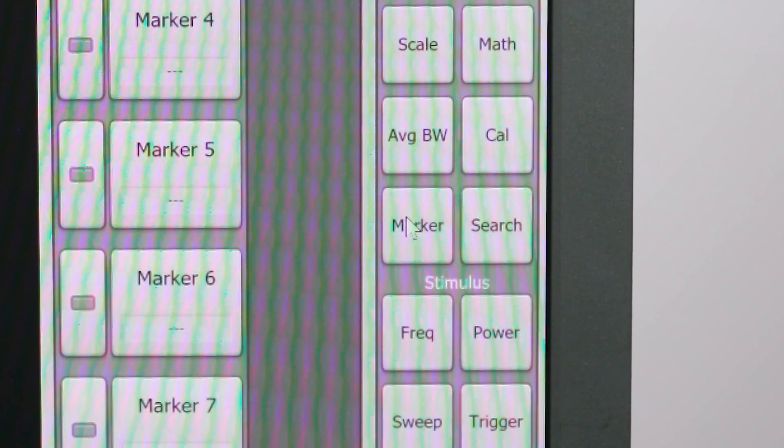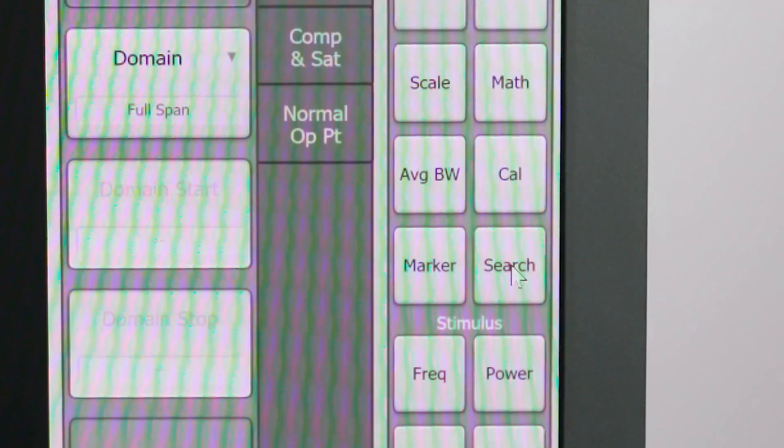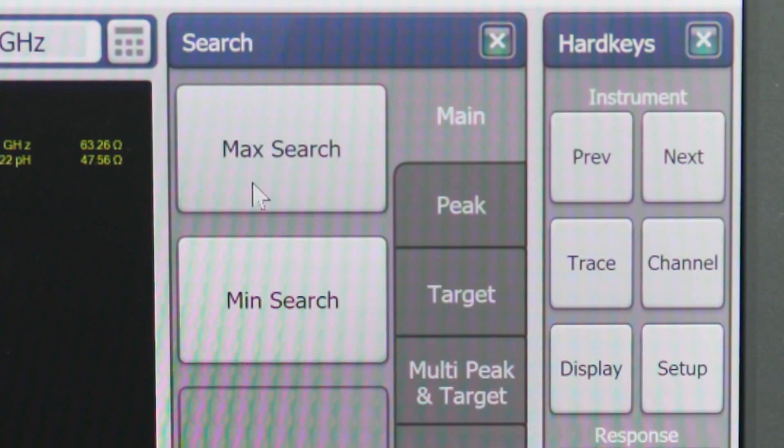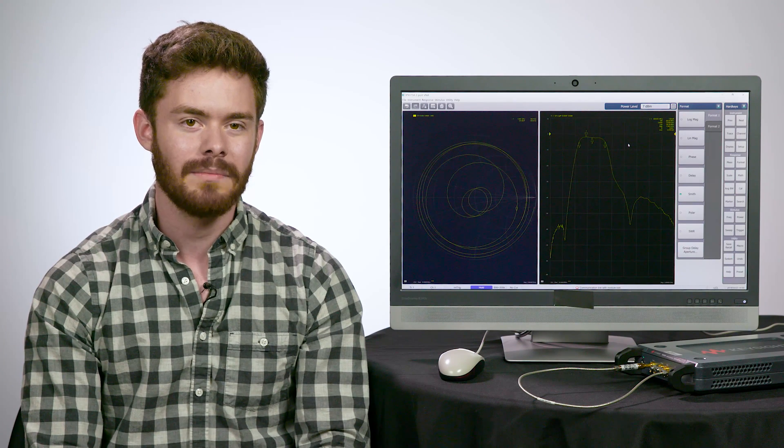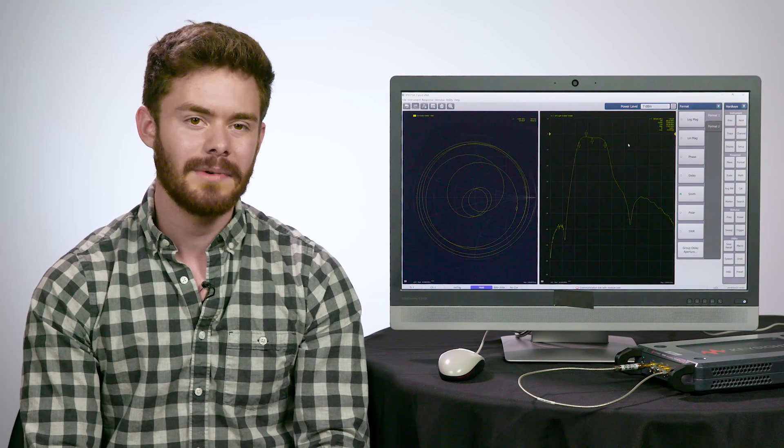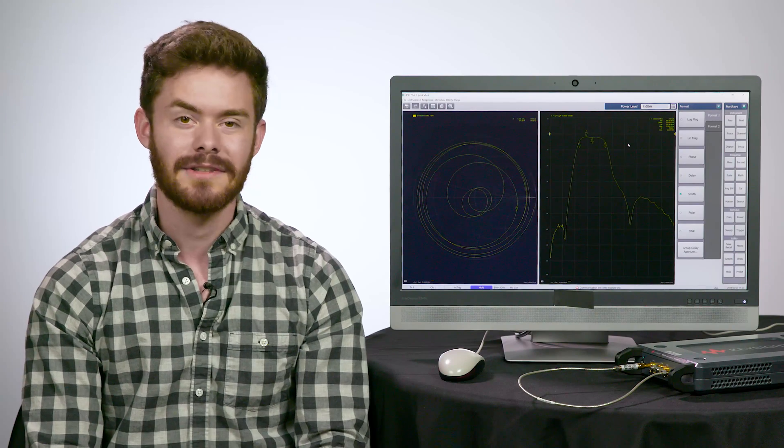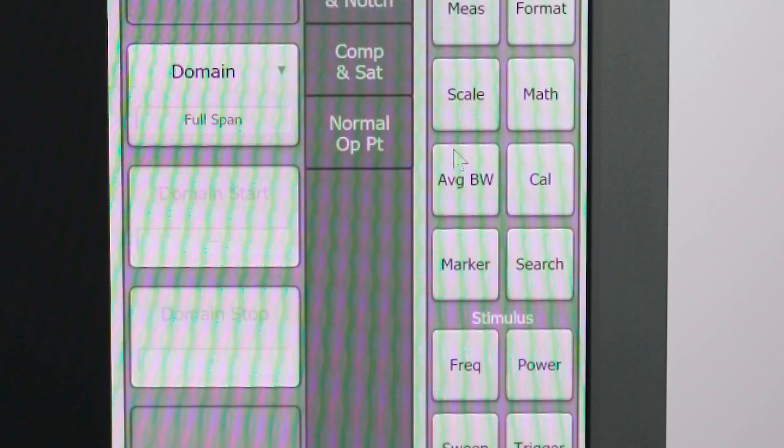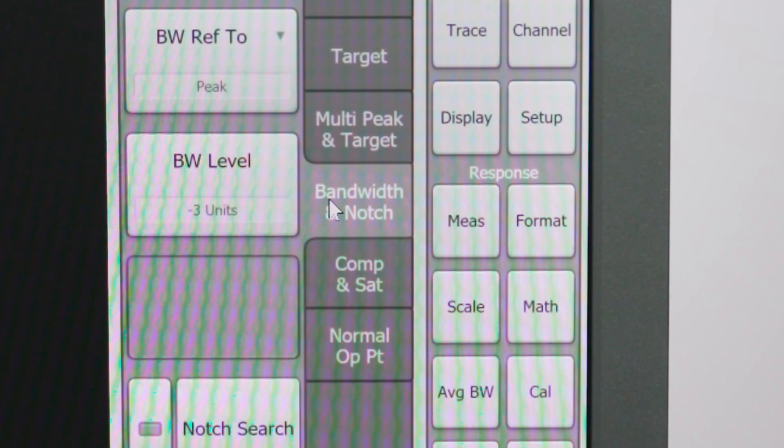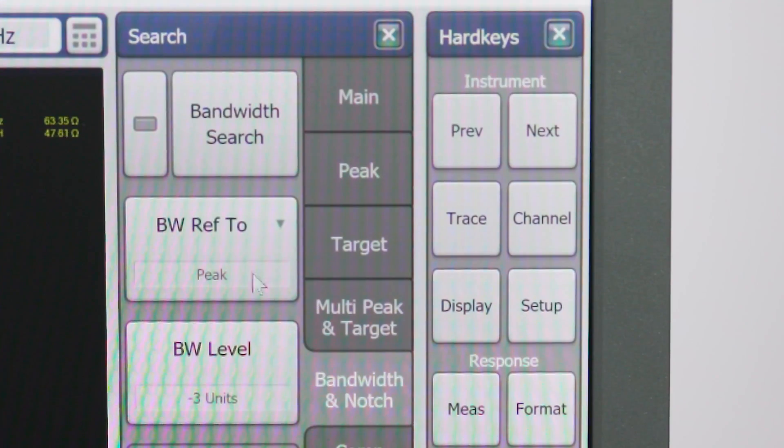Using a marker on this trace, I can measure the maximum power of the trace. Using the marker and max search functions, I find the max value is about minus 1.6 dB, which means we have about minus 1.6 dB insertion loss. We can also easily analyze the bandwidth of this bandpass filter we're testing by pressing Select and Bandwidth and Notch. Just press Bandwidth Search to analyze the bandwidth.